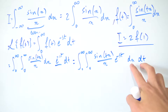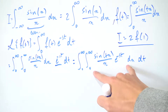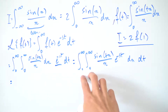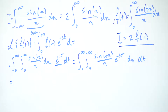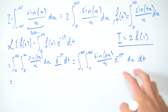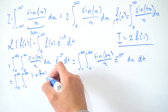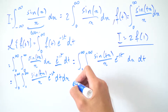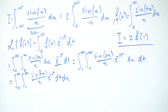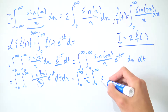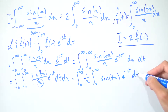Now I'm going to interchange the two integrals to generate another Laplace transform on the inside. Since both integrals have the same bounds, we just switch the differentials. We get the integral from zero to infinity of the integral from zero to infinity of sine(tx)/x · e^(−st) dt dx. Since the inner integral is with respect to t, the 1/x factor is constant with respect to t and can be pulled outside, giving the integral from zero to infinity of 1/x times the inner integral of sine(tx)·e^(−st) dt dx.